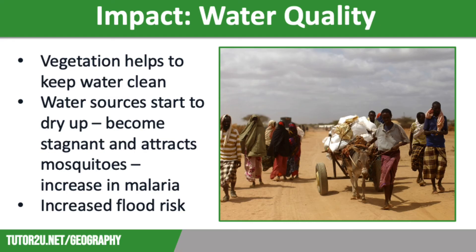Our final impact is water quality. Desertification means that less vegetation can grow, and plants play an important role in keeping water clean and clear. Water sources will start to dry up, and if there is less water in a river or pond, it is more likely to become stagnant. Stagnant water encourages insects such as mosquitoes, which can increase the level of malaria in an area. Desertification can also lead to isolated incidents of flooding during heavy downpours in the wet season, because the loss of vegetation reduces interception and infiltration, increasing surface runoff. The soil also bakes rock hard in the hot sun, making it difficult to absorb water when it does rain.